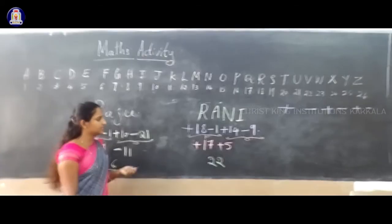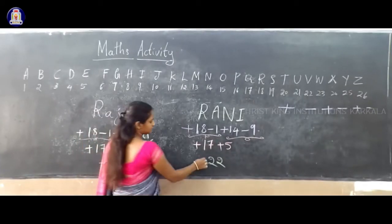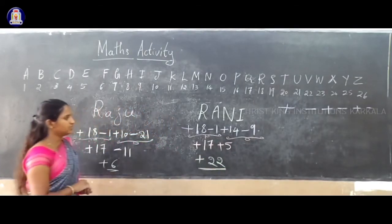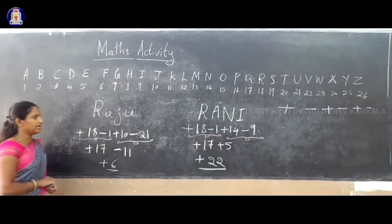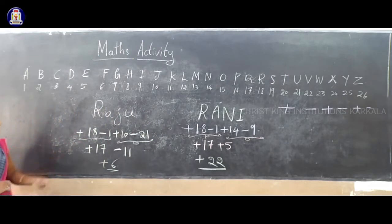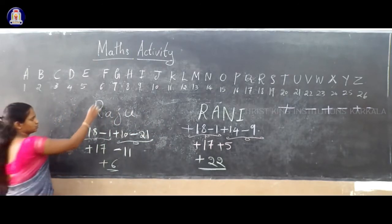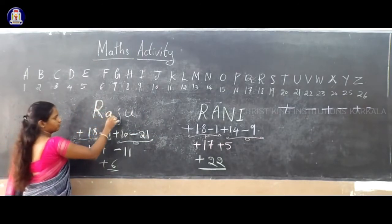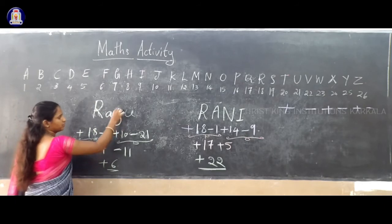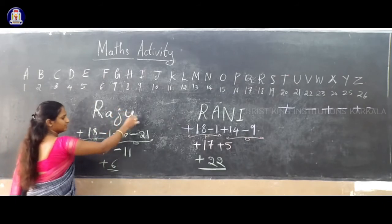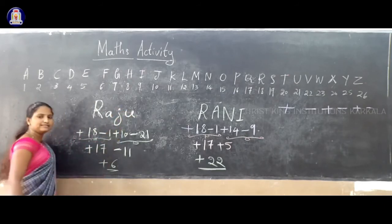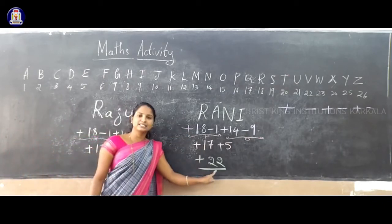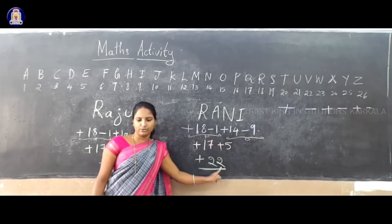17 plus 5 — same sign means addition. 17 plus 5 is 22. So the answer is plus 22. Raju gives plus 6 and Rani gives plus 22.